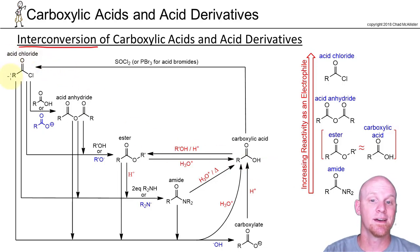The acid chloride is the most reactive one, and you can turn it into any of the others. You can turn it into an anhydride, an ester, an amide, a carboxylic acid, or a carboxylate. You can do it all directly in one step.